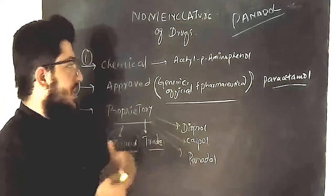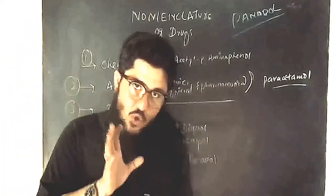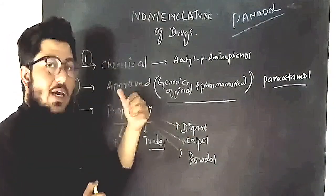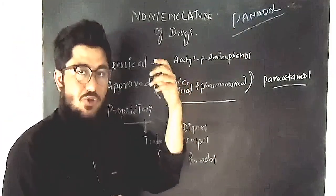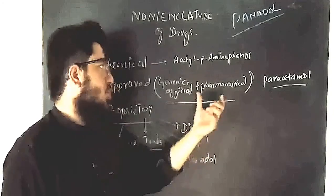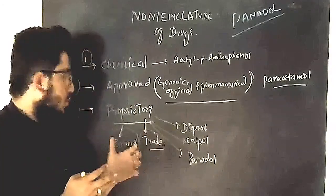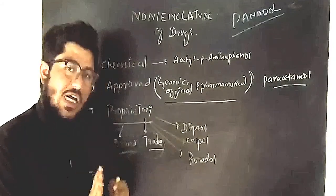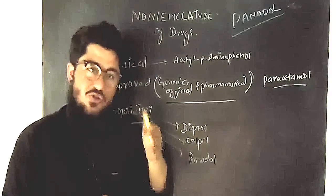The proprietary name, or trade name, does not match directly with the generic approved name or chemical name. Different companies take the same drug — paracetamol — and manufacture it under different brand names. For example, Panadol is a proprietary or trade name given by a specific company. These brand names or trade names are what the producing company calls their version of the drug.